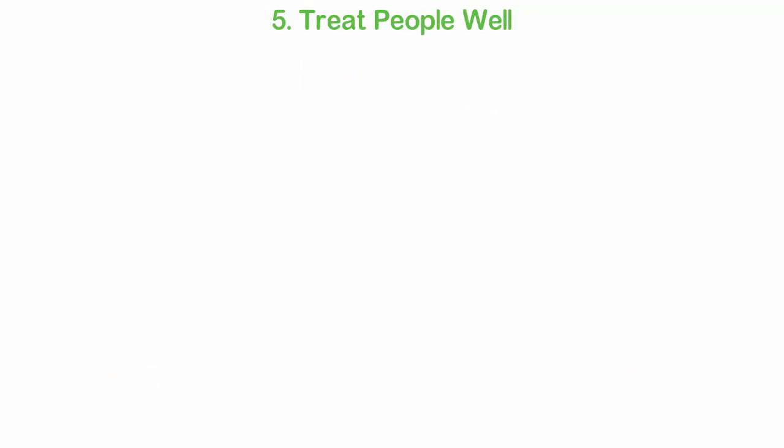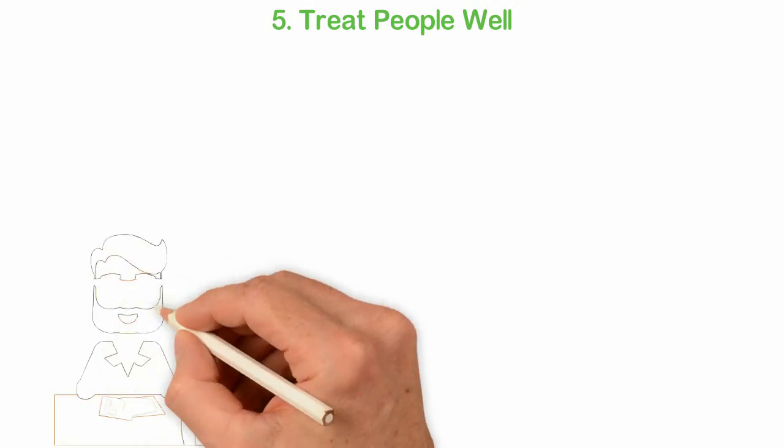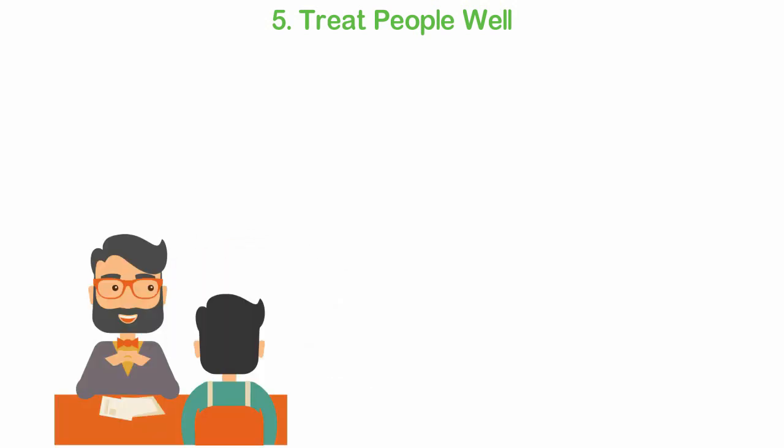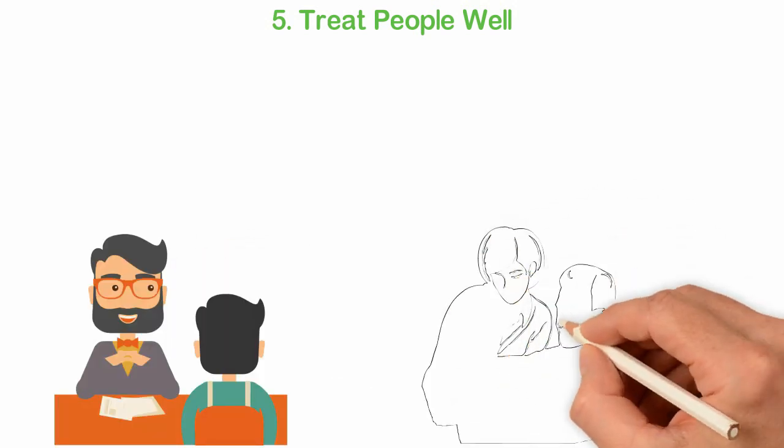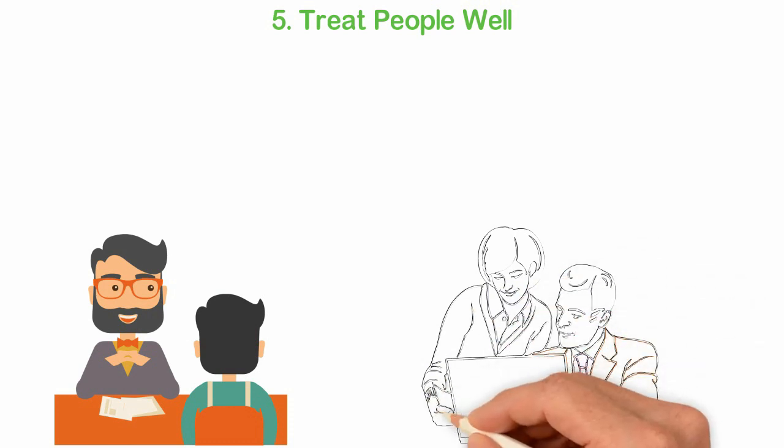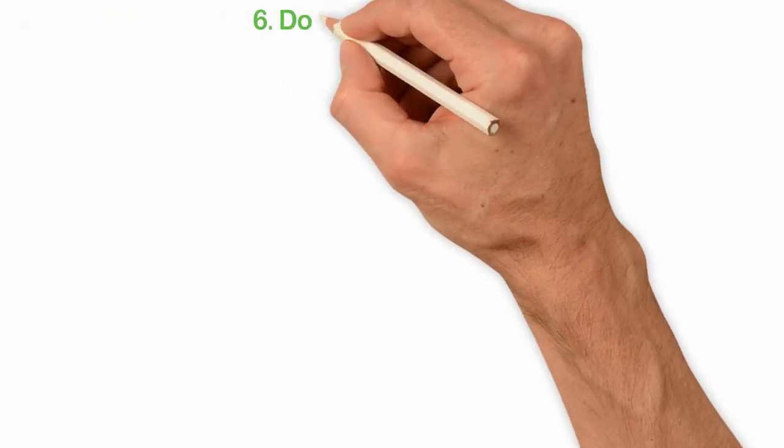5. Treat people well. I just hired someone in my company this morning and one of the first things I told him is that I don't like to treat people like an employee and that's the truth. Though the business world is tough, you can also be tough and be nice at the same time. You can be tough without treating people like your servants. You can get results and be nice at the same time.